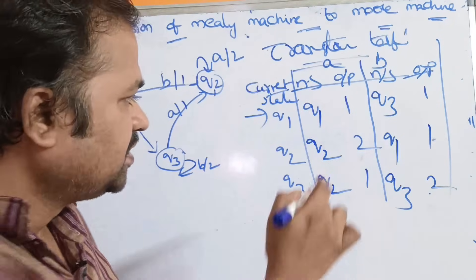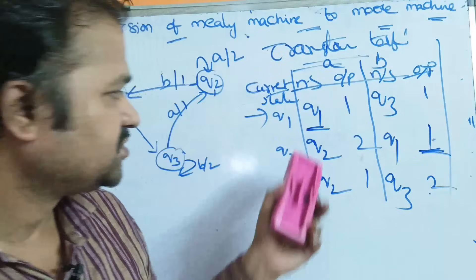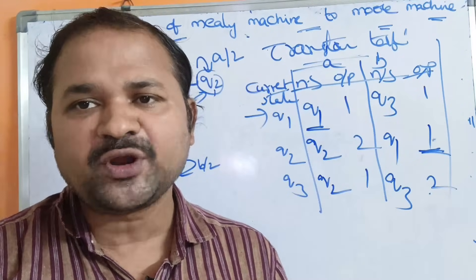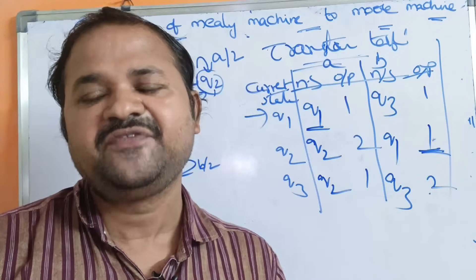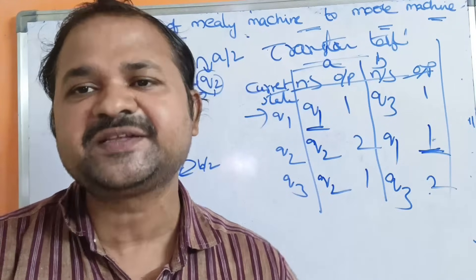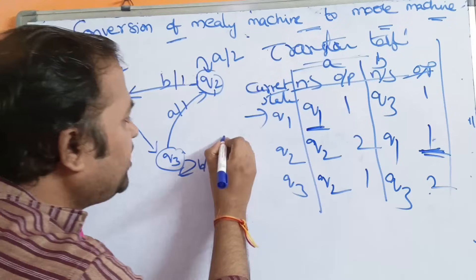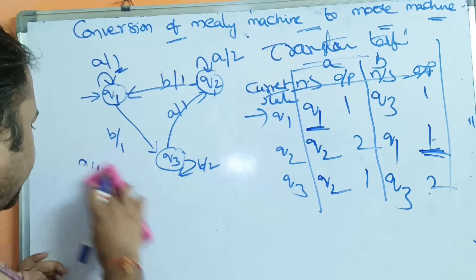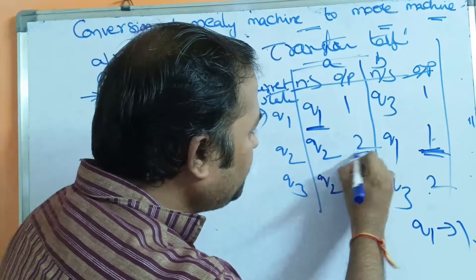Now let's check the outputs. The output of Q1 is 1 in all cases. In a Moore machine, the output depends only on the present state, so each state must have only one output value. If a state produces multiple output values, we have to split it into separate states. Since Q1 always outputs 1, we have only one Q1 state.